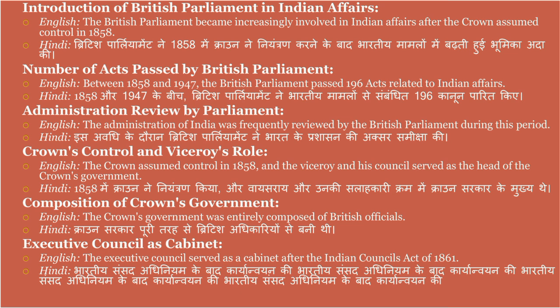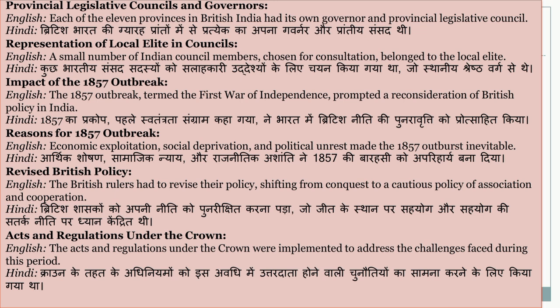The crown's government was entirely composed of British officials. Crown ki sarkar puri tarah se British adhikariyon se bani thi. The executive council served as a cabinet after the Indian Councils Act of 1861. Each of the 11 provinces in British India had its own governor and provincial legislative council. British Bharat ke gyarah prantho mein se pratyek ka apna governor aur pranthiya sansad thi.